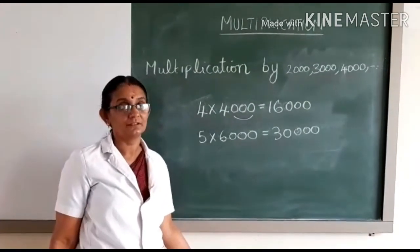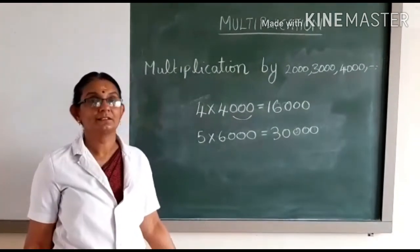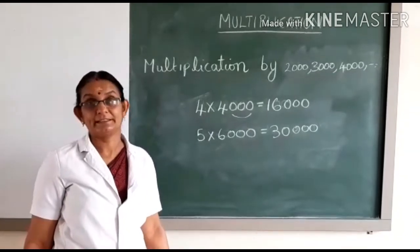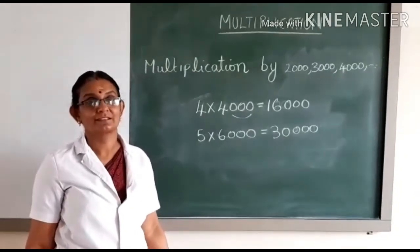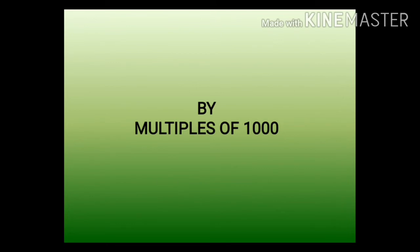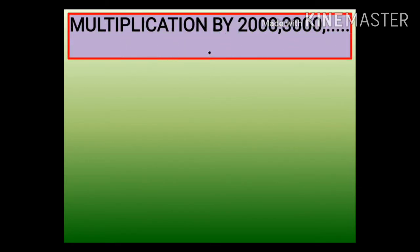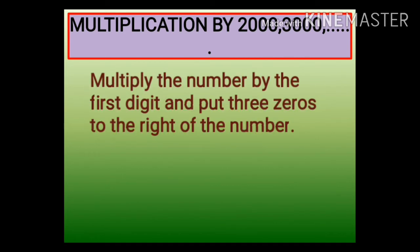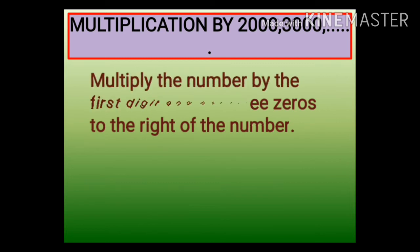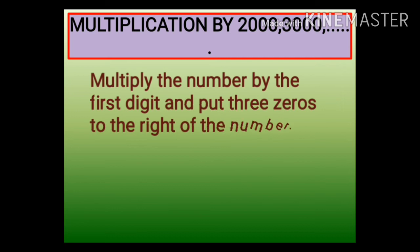So now you have learned how to multiply numbers with multiples of 10, 100, and 1000. Now let us learn how to multiply a number by multiples of 1000 — that is 2000, 3000, and so on. For this, we have to multiply the number by the first digit and put three zeros to the right of the number.